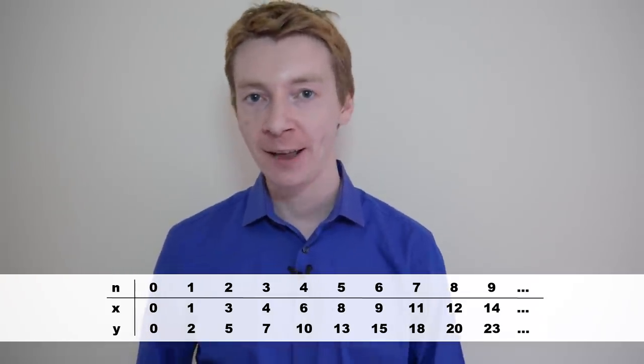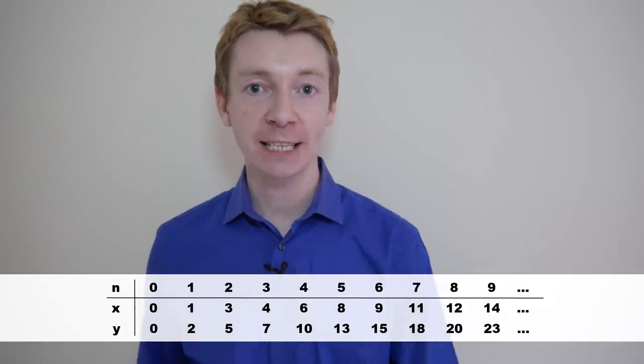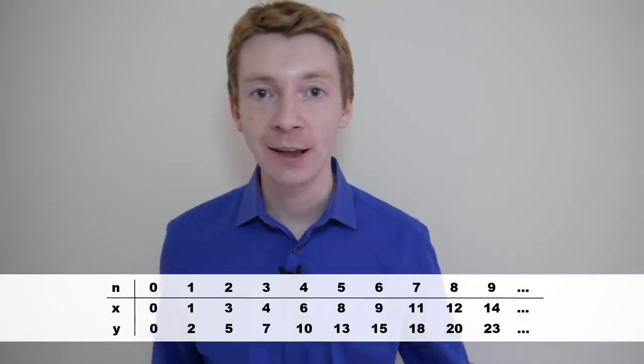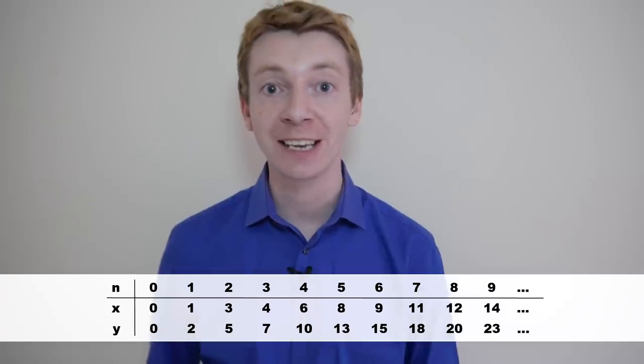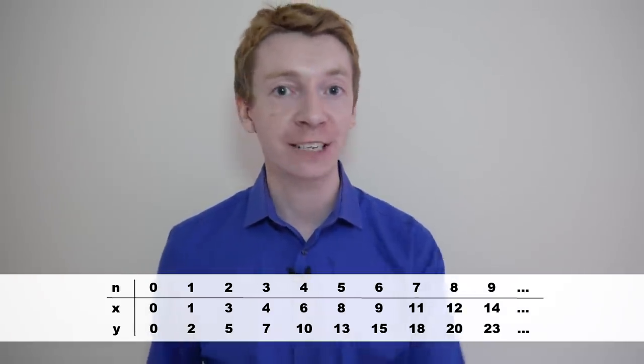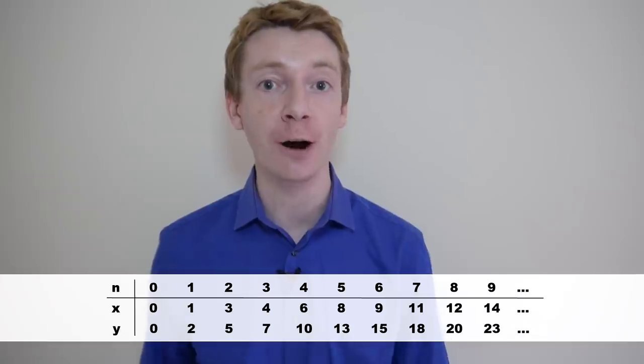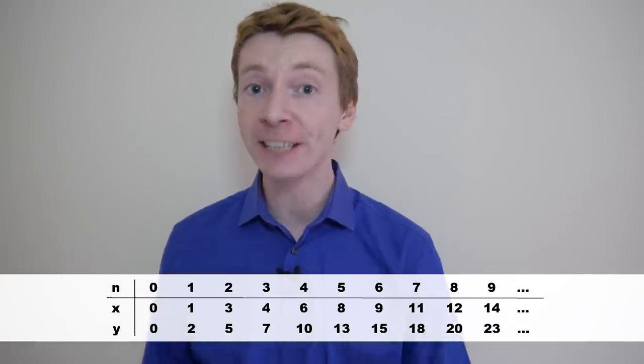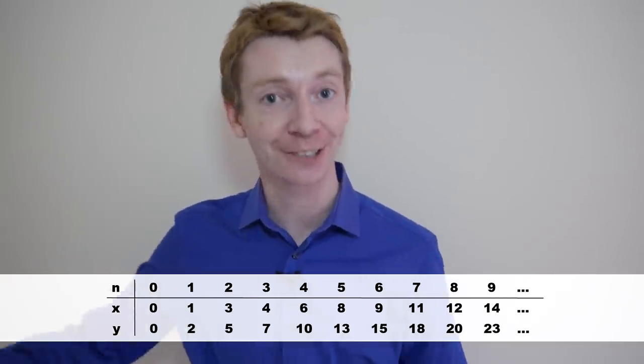The first thing to notice is that for the nth losing square, the difference in the coordinates is n. So, for example, for the third losing square, the coordinates are 4-7, and the difference is 7-4, and that's 3.